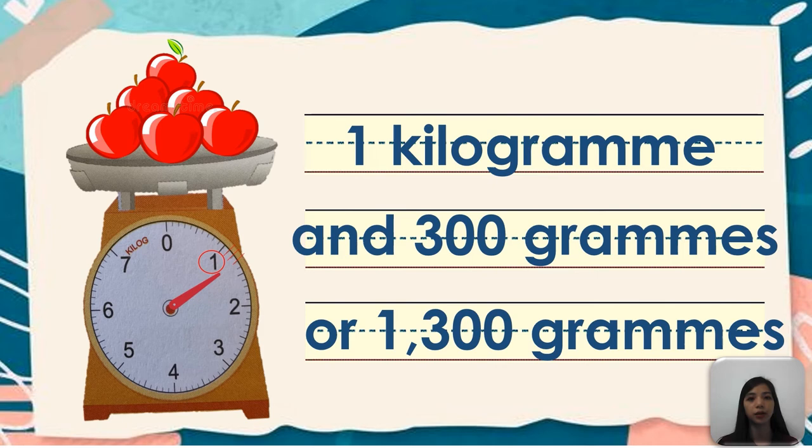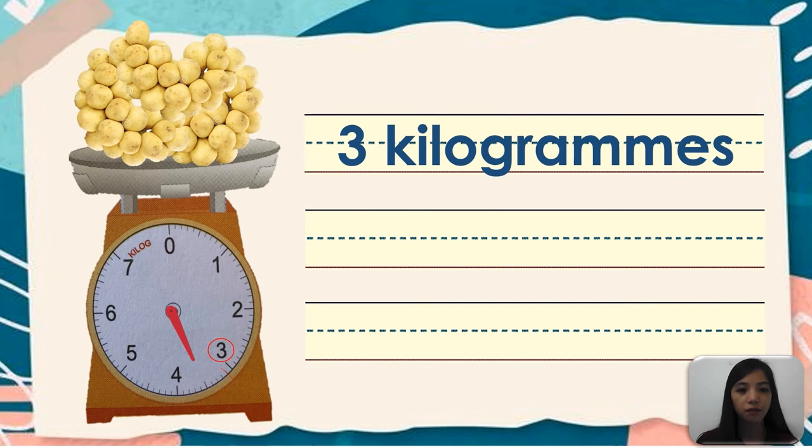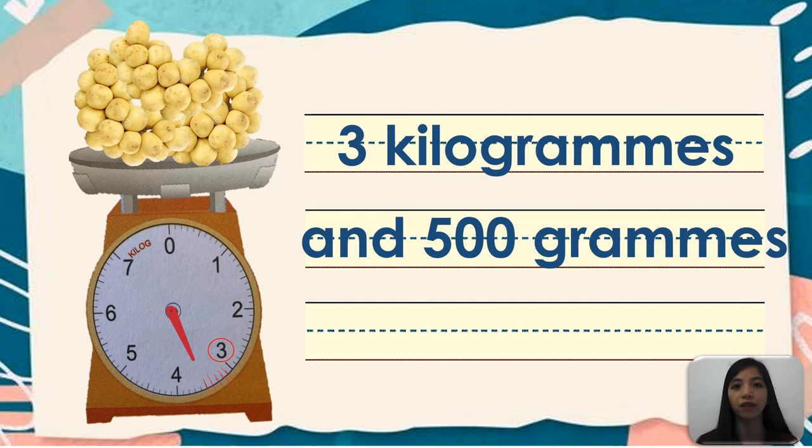Next example, we are going to measure the weight of Lanzones. So the pointer points near at 3 kilogram marks. So meaning to say we will put 3 kilograms and then 1st, 2nd, 3rd, 4th, 5th. So this is 100, 200, 300, 400, 500 grams. So 3 kilograms and 500 grams or 3,500 grams.